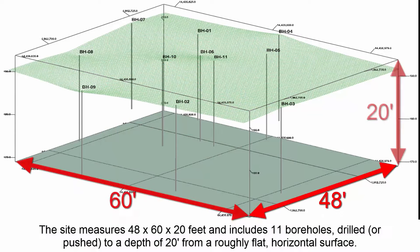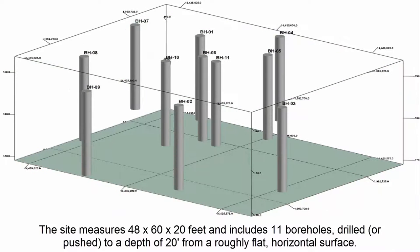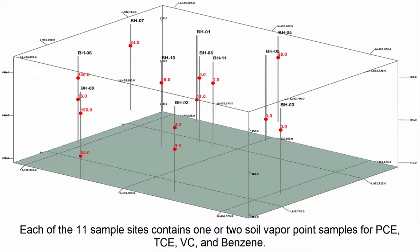The site measures 48 by 60 by 20 feet and includes 11 boreholes drilled or pushed to a depth of 20 feet from a roughly flat horizontal surface. Each of the 11 sample sites contains one or two soil vapor point samples.